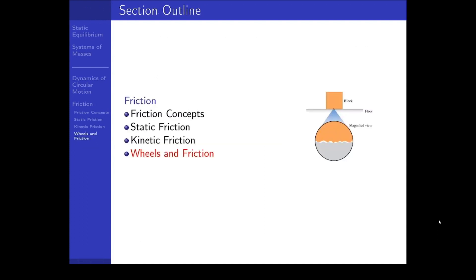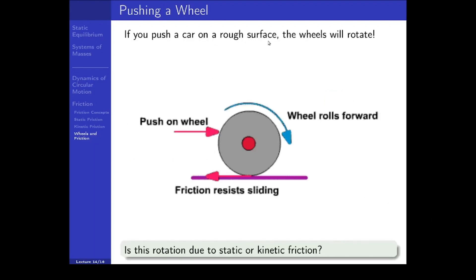The last thing I want to talk about is wheels and friction. If you push a car on a rough surface, the wheels will rotate. If you push the wheel itself, the bottom of the wheel is in contact with the floor, and there is a friction force opposing your attempt to slide that bottom surface to the right. As a result of that leftward force, the wheel will start to rotate clockwise. Is this friction static or kinetic? It's static friction, because the bottom of the wheel — the rubber — is not sliding relative to the floor. It is rolling: there is contact and then the contact is released, but there is no sliding occurring.